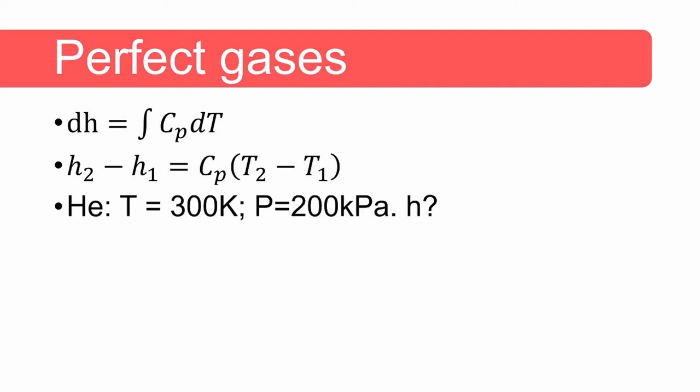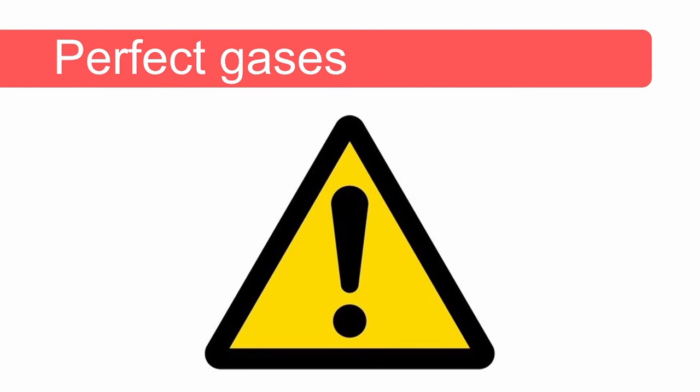If we were asked to calculate the value of enthalpy for helium at 300 Kelvin and 200 kilopascal, we would not have been able to do it. Now you need to watch out. A common mistake is to assume perfect gas behavior for steam and use the value of CP for steam found in tables to calculate the change — and even enthalpy itself — for steam.